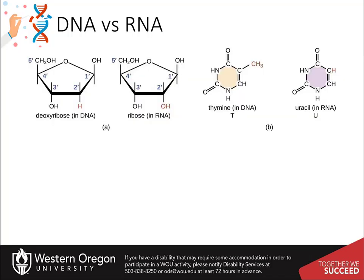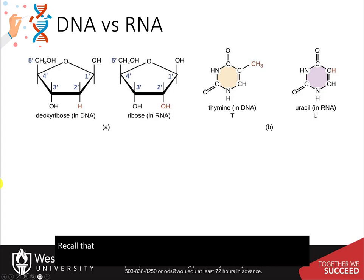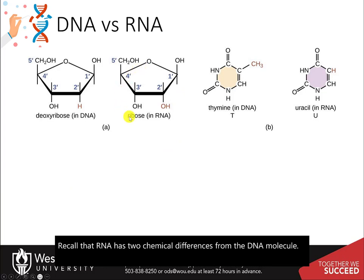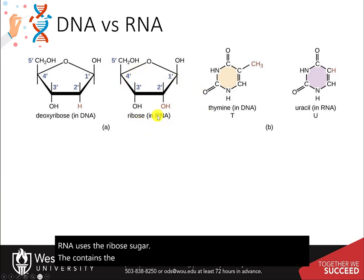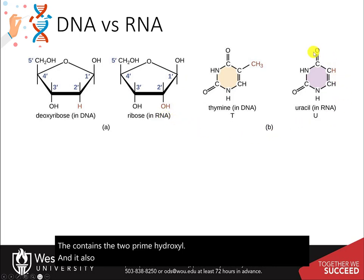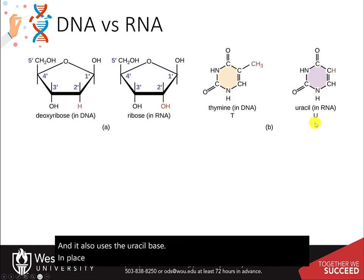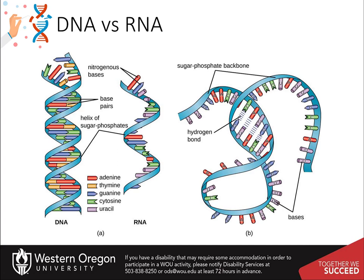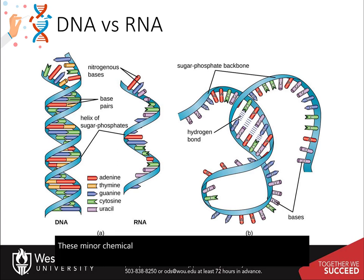Recall that RNA has two chemical differences from the DNA molecule. RNA uses the ribose sugar that contains the 2' hydroxyl, and it also uses the uracil base in place of thymine in the DNA. These minor chemical differences result in major structural differences between the molecules.